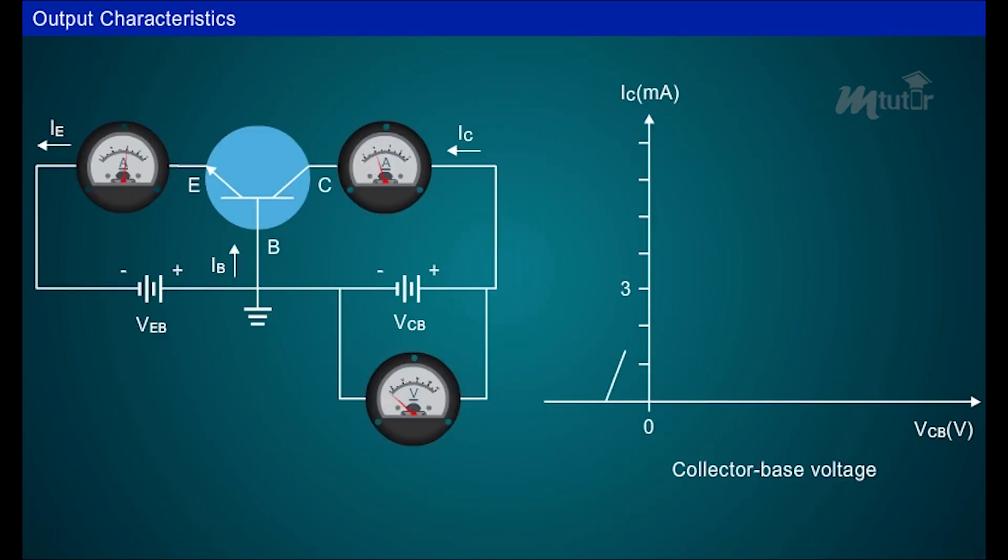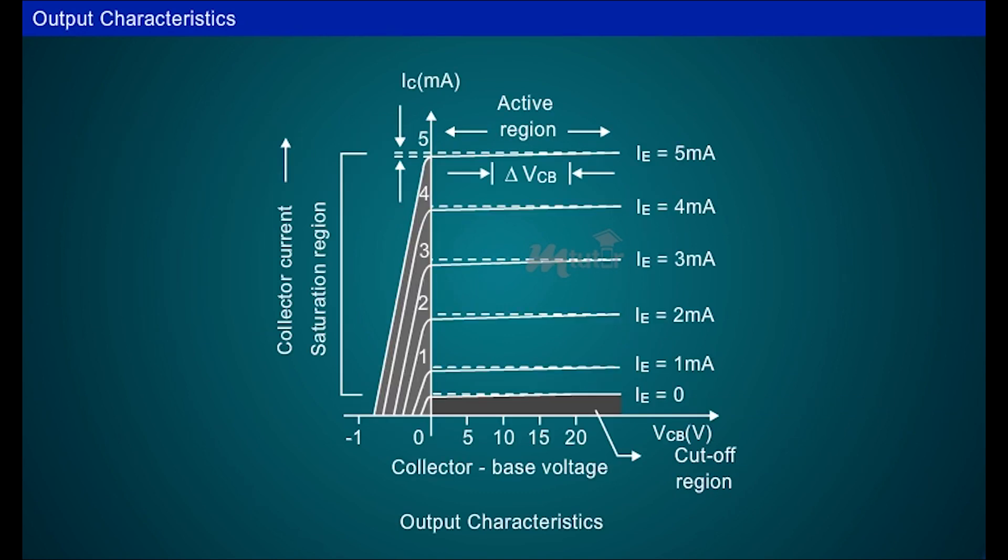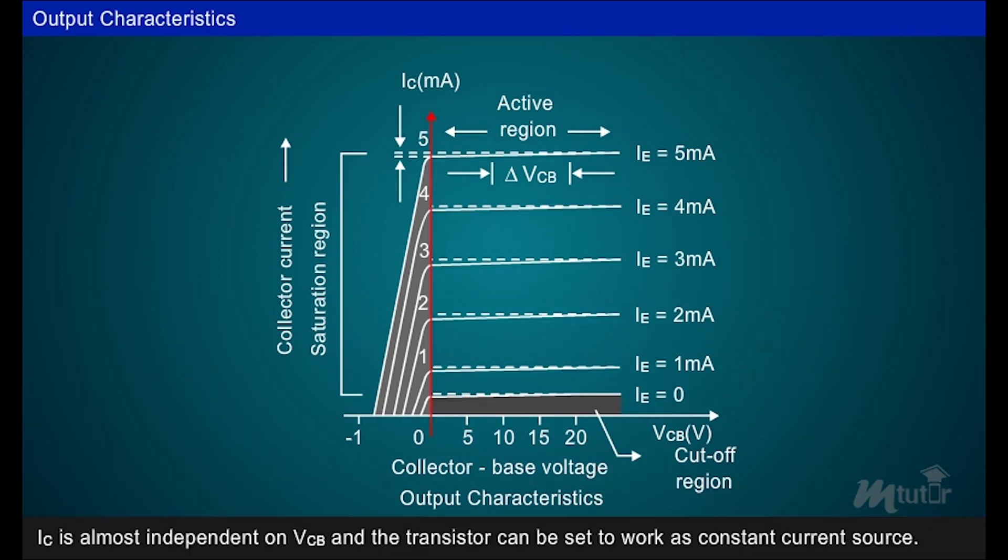There is an exponential increase in collector current as the voltage VCB increases towards zero volts. In the active region, the collector current is essentially almost constant and the graph is almost parallel to x-axis. The collector current IC is almost independent of collector base voltage VCB and the transistor can be set to work as constant current source.